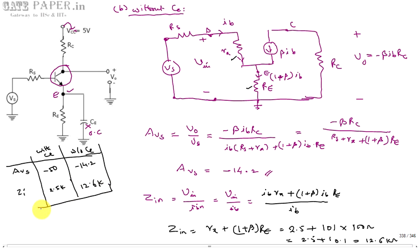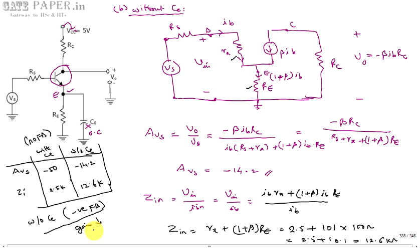Without CE means using negative feedback — specifically voltage-series feedback — while with CE means no feedback. With negative feedback, gain reduces and input impedance increases. This confirms our results: removing CE (adding feedback) reduces gain from minus 50 to minus 14.2 and increases input impedance from 2.5 kΩ to 12.6 kΩ.